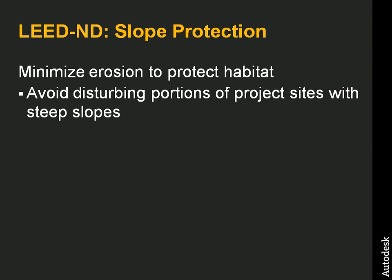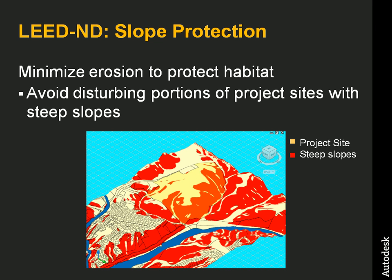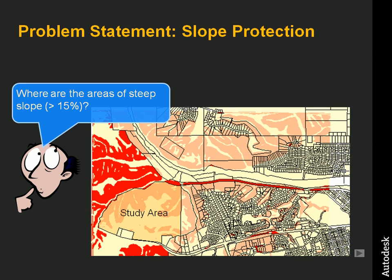One category in which points can be accumulated towards LEED certification is in the area of steep slope protection. The objective is to minimize erosion to protect habitat and reduce stress on natural water systems by preserving steep slopes and keeping them in a natural, vegetated state. One option in this category requires that project sites avoid disturbing areas with slopes greater than 15%. A quick way to check whether a proposed site qualifies for maximum points under this option is to superimpose a 2D CAD drawing of the site and a 3D Digital Elevation Model, or DEM, and then perform a simple thematic map based on slope.